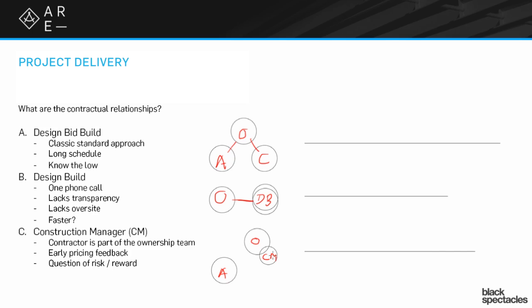With design-bid-build, the architect is given a contract to design a building. That design process goes on for a number of months, moving through schematic design, design development, contract documents, bidding, and then construction administration. Before we get to the bidding, all of the design work has happened. So there's a very long period where the design work happens sequentially before the contractor is chosen and the building is finished. One of the disadvantages is this takes a very long time — everything happens sequentially.